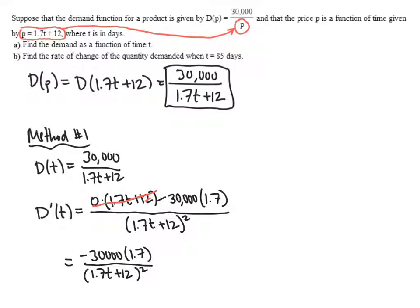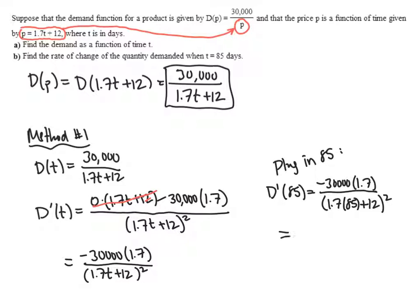And so now we just have to plug in 85. When we do that, we get D prime of 85. That's what they're asking for. Is negative 30,000 times 1.7, all divided by 1.7 times 85 plus 12 parentheses squared. And then all we have to do is type that in our calculators.